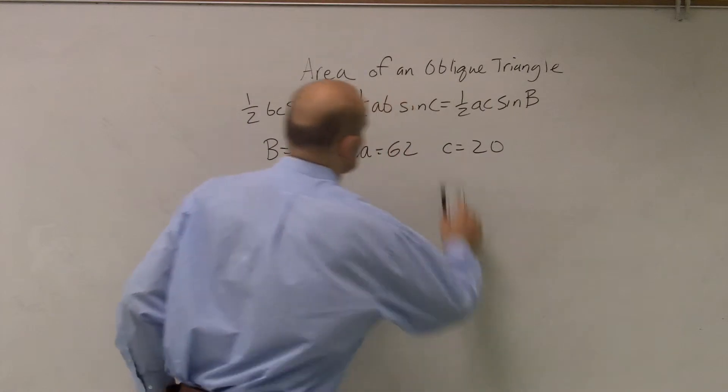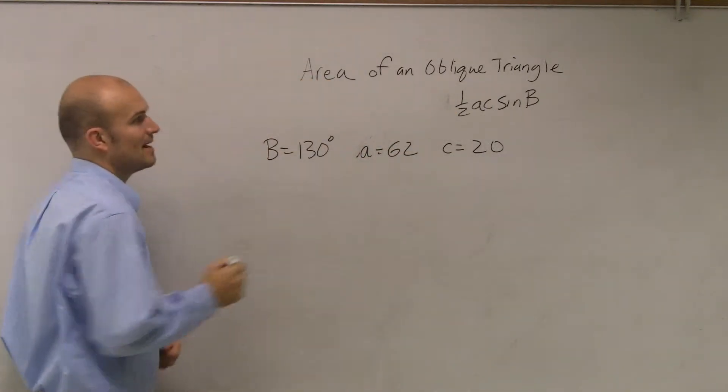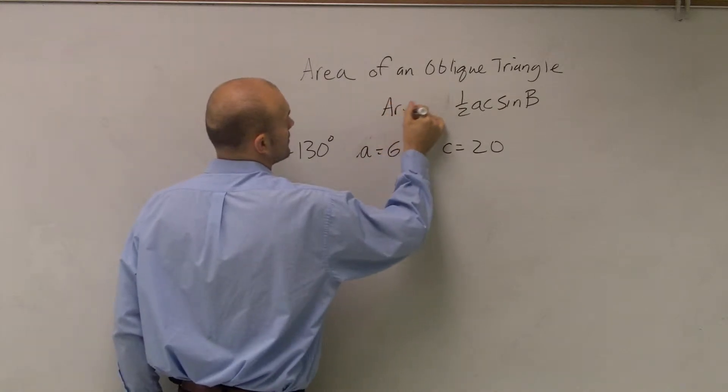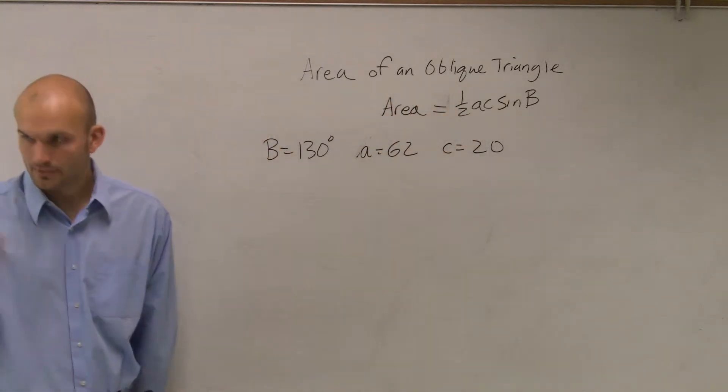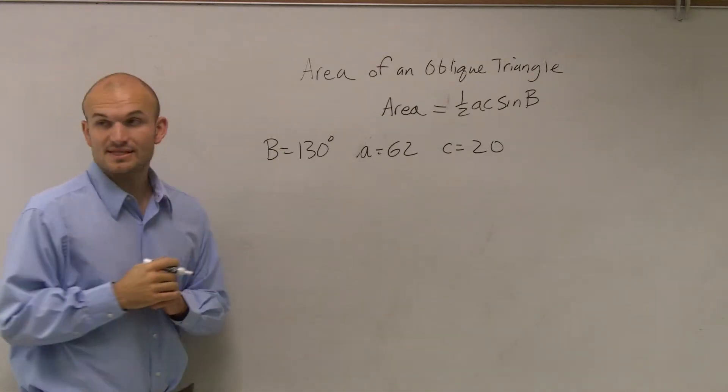So what I'm simply going to do then is just erase all this other stuff. So that is going to be my area of my triangle. Right there. A times C. So one-half, A times C, sine of B.